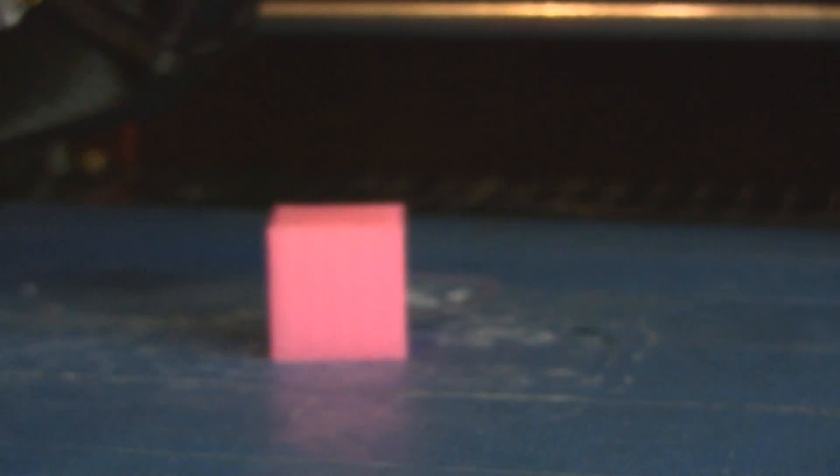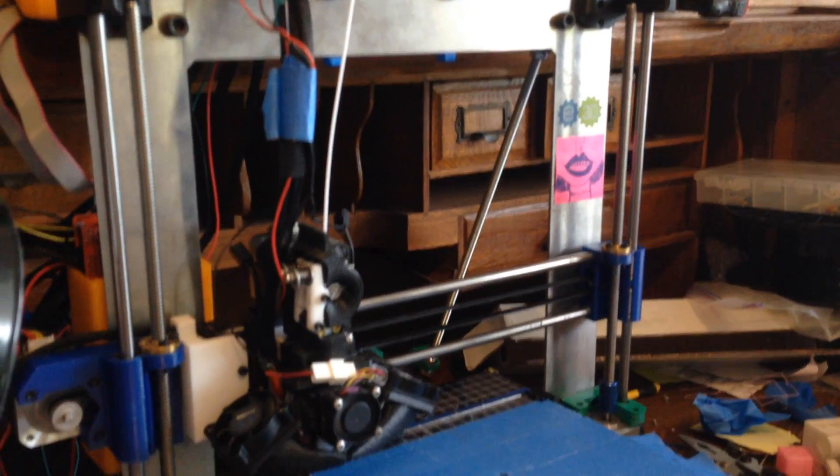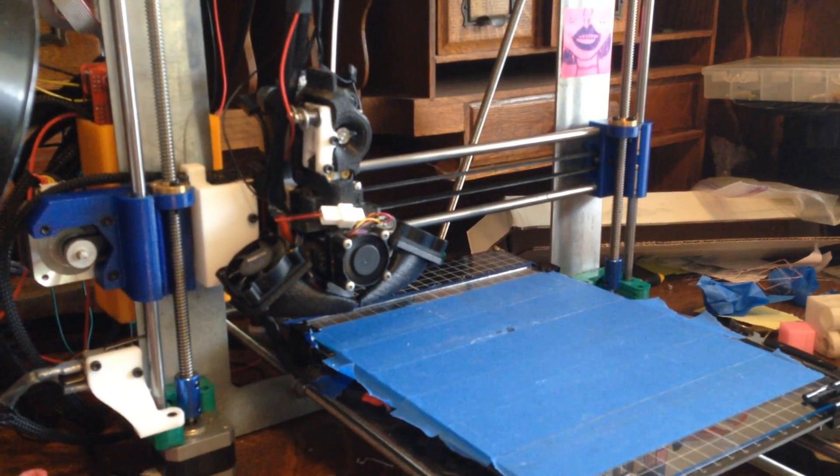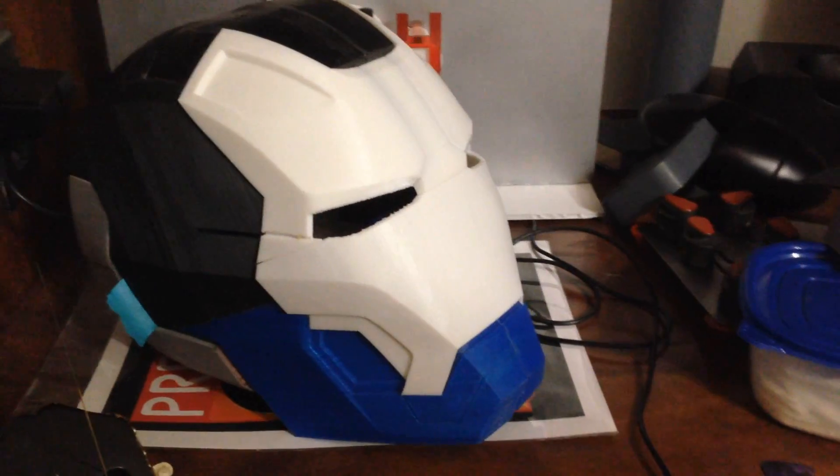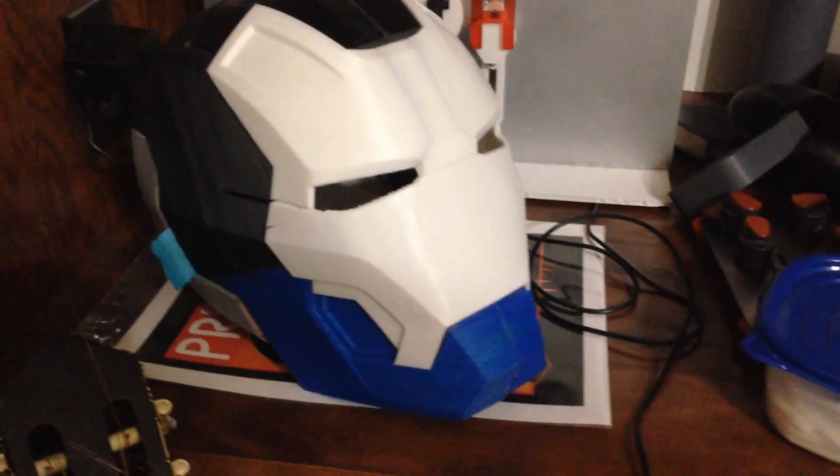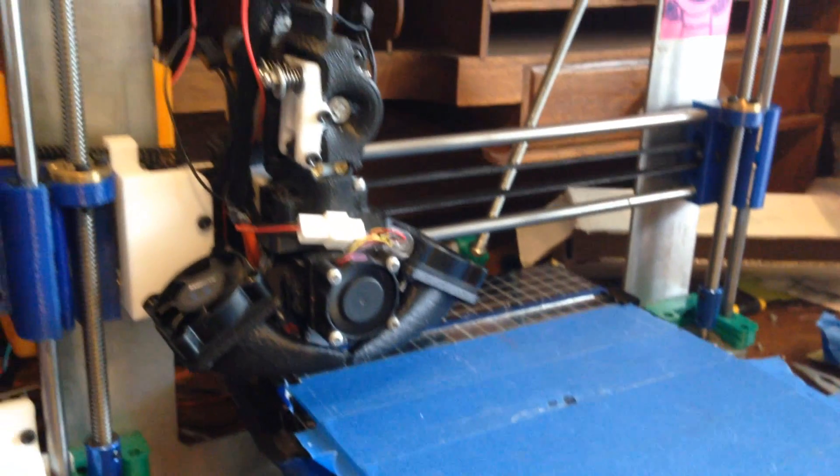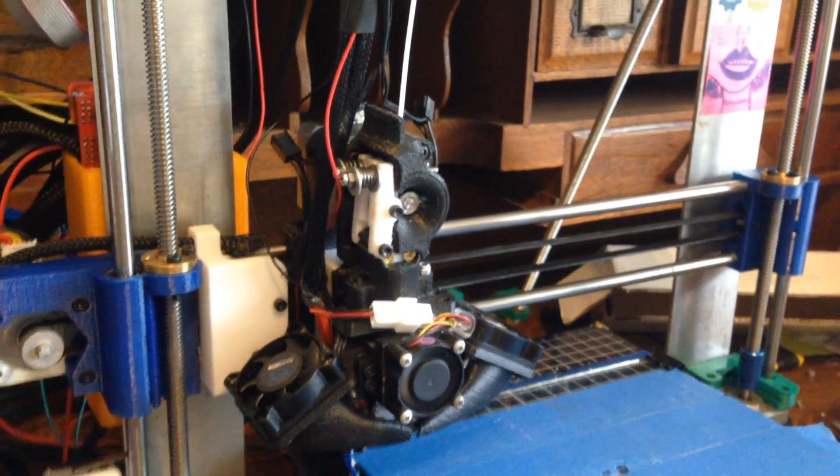I do have some more upgrades planned for the future, and I will make videos about those. But for now, this is where my printer is at. I've already printed off a new faceplate for the Mark 42 helmet that I'm working on, and it turned out really nice. If you haven't already seen the previous videos in this series, go and check those out. Until next time, I'll see you guys later.